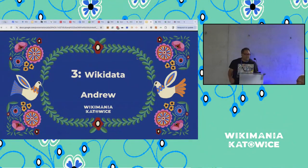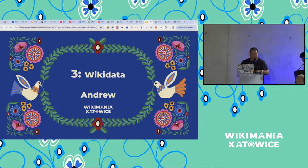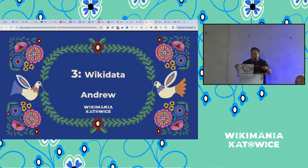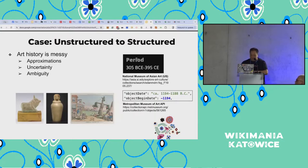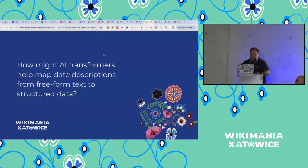Since it's late in the day, I'm just going to share one exact use case and hopefully you find it interesting. I've given you the training data I've used and you can try it out and see what kinds of interesting things you can do. I have a very simple problem we're trying to solve in the GLAM space: how might we use AI transformers to help map date descriptions from free-form text to structured data?